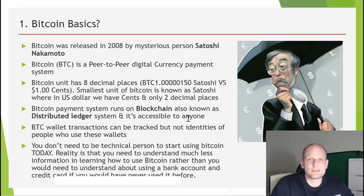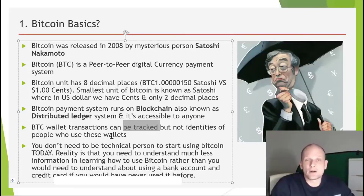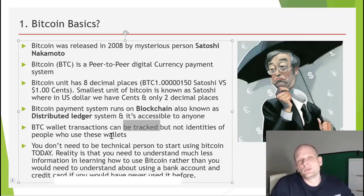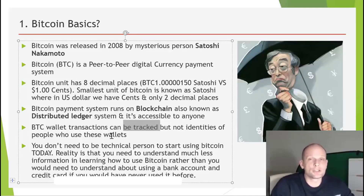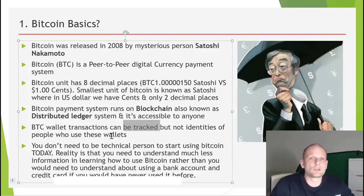In a Bitcoin wallet, your public key is pretty much your bank account number — you share it with anyone you want to receive money from. You send someone your public key and they send Bitcoin to it. To access those Bitcoins on the blockchain, you use your private key. So: public key for sharing, private key for accessing your funds. We will look at this in closer detail in a future lesson.